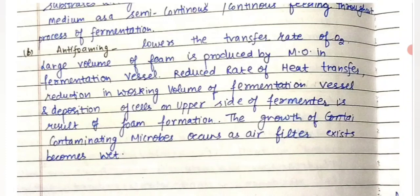Anti-foaming agents can also be added to the media. Anti-foaming agents lower the oxygen transfer rate. Large volumes of foam produced by microorganisms in the fermentation vessel result in reduced rate of heat transfer, reduction in working volume of the fermentation vessel, and deposition of cells on the upper side of the fermenter. Growth of contaminating microbes can also occur as the air filter becomes wet due to foam formation.